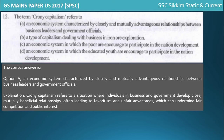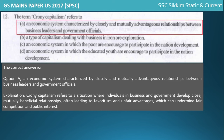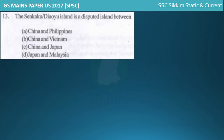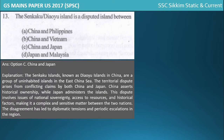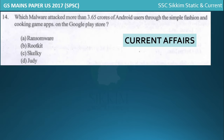For crony capitalism, the definition is: an economic system characterized by closely and mutually advantageous relationships between business leaders and government officials. The next question is about the Senkaku Islands - a disputed island between China and Japan. The PDF description will cover these topics. We are not discussing the malware attack question as it is a current affairs topic from 2017.